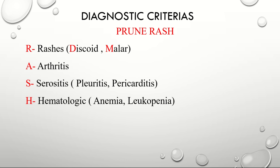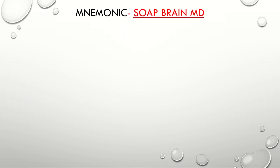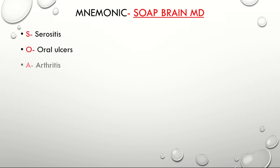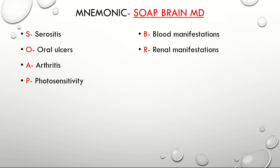If you are not into this mnemonic, we also have a very famous mnemonic which is 'SOAP BRAIN MD.' S is for serositis. O is for oral ulcers. A is for arthritis. P is for photosensitivity. B is for blood manifestations such as anemia and leukopenia. R is for renal manifestations — proteinuria and hematuria.